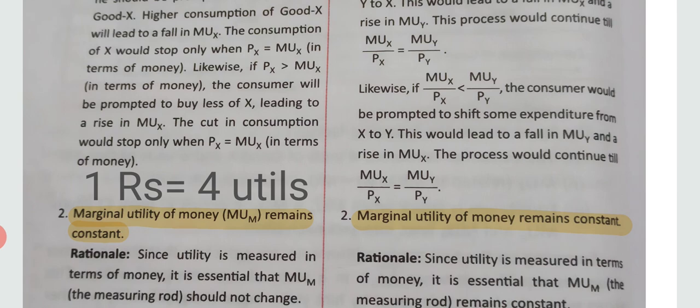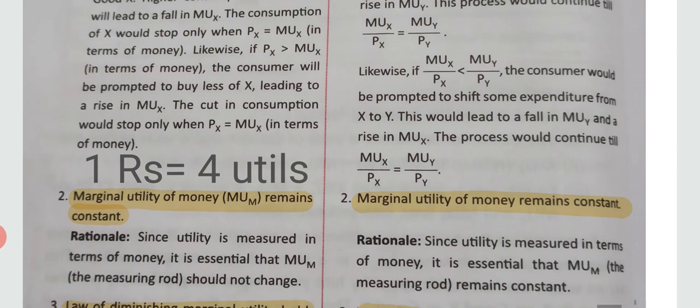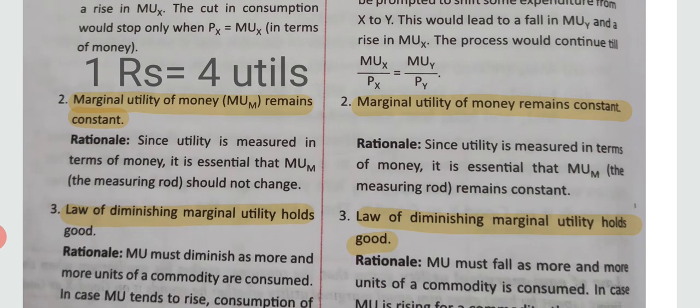The second condition is that the marginal utility of money remains constant — for example, spending one rupee always gives four utiles of satisfaction and this does not change. The third condition is that the law of diminishing marginal utility holds good.